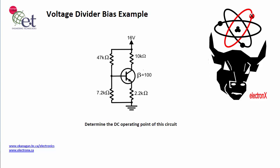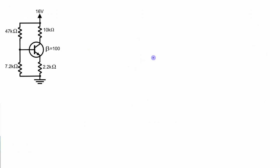Welcome to the ElectronX channel. In this video I am going to do an example where I calculate the operating point of this circuit. I'm going to use two methods to do this calculation. The first method is the more precise method, and the second method is an approximation. I'll also show you when and under what conditions you can use that approximation.